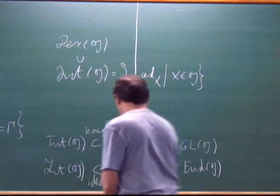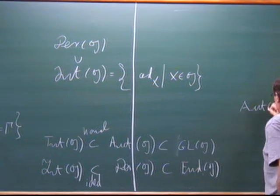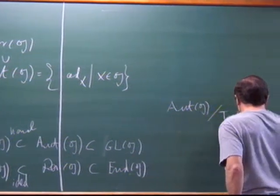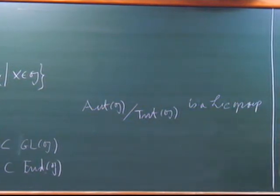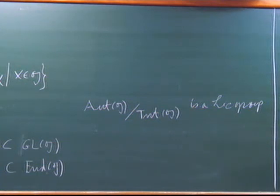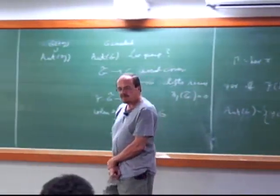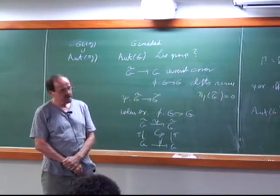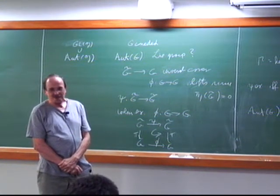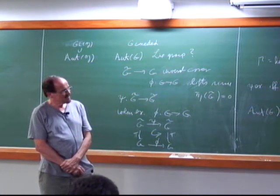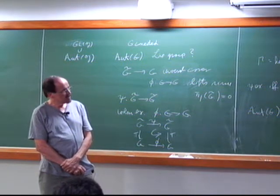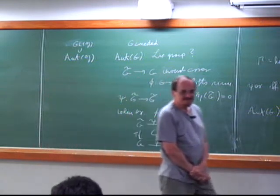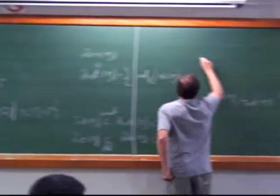We also have the automorphism group of G. This says that Aut(G) mod Int(G) is a group — I want to be a little careful. If I really want to prove that rigorously, there's something not quite so obvious. It's a normal subgroup, so that quotient has a group structure. Why is it a manifold? It's a closed subgroup, so by the theorem that if H is closed in G, then G mod H is a manifold such that the projection is a submersion.